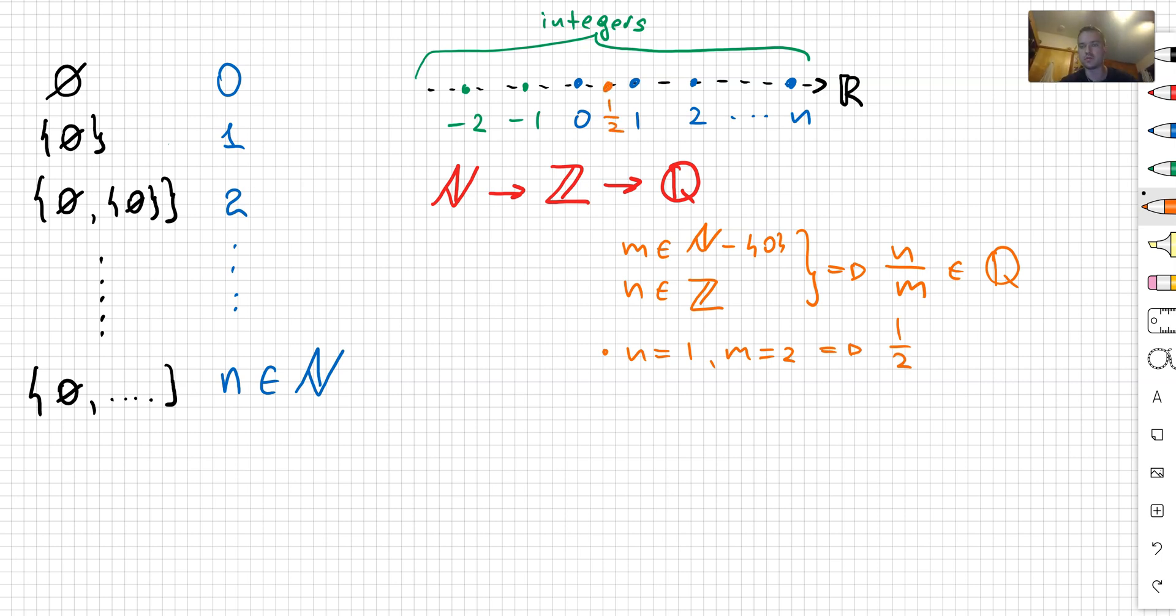So right now you can visualize that by taking all possible combinations of m and n, I'm going to fill in the real axis with these orange dots. And these orange dots are exactly the rational numbers.